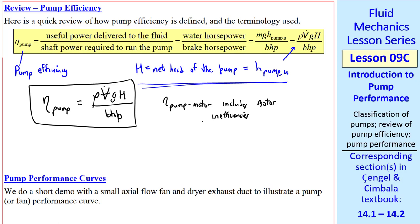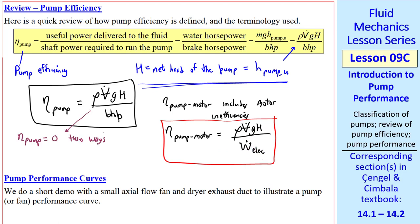Often these pumps are attached directly to a motor, and we don't really care about the shaft power, rather the electrical power to run the pump. So we write eta pump motor, which includes the motor inefficiencies as well. So eta pump motor is rho V dot G H over the electrical power required to run the pump. As for all efficiencies, we have a useful output divided by the required input. In either of these cases, there are two ways for eta pump to be zero.